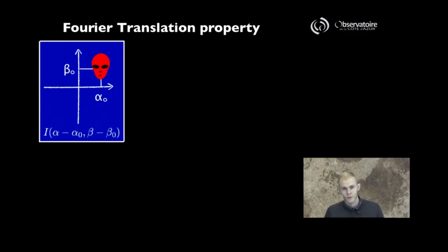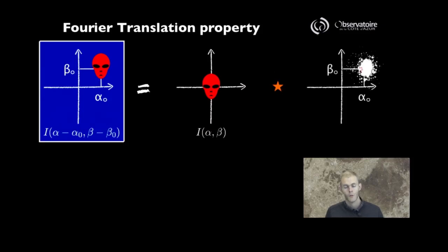You would describe this off-center position using a convolution operation. This off-axis intensity distribution can be expressed as the convolution product of the on-axis intensity distribution function and a Dirac distribution, delta function, centered on the point of coordinates alpha-naught and beta-naught.